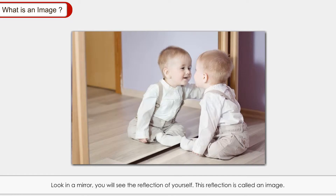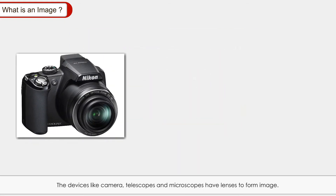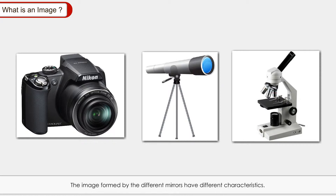What is an image? When you look in a mirror, you see the reflection of yourself — this reflection is called an image. An image is an actual representation of an object, formed by a smooth surface such as still water and mirrors. The eyes of animals, including humans, have lenses to produce images, and devices like cameras, telescopes and microscopes also have lenses to form images. The reflection of light by different surfaces has different properties, and images formed by different mirrors have different characteristics.